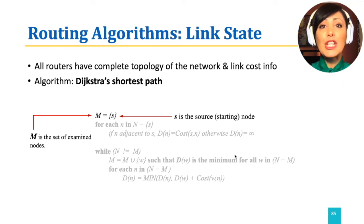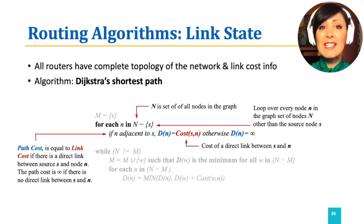Next, for each node of the network, except a current node or source node, if the node is adjacent to the source, the cost of reaching it is set to the direct link cost, otherwise to infinity. Basically, this step of the algorithm initializes the source to only have the direct link costs to neighbors.